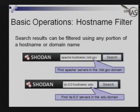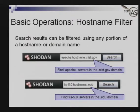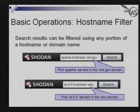Here are a couple of other searches to show the hostname filter. The hostname filter searches results using a portion of a host or domain name. For example, 'Apache hostname:.nist.gov' only finds results in the nist.gov domain. The second example is 'IIS 5.0 hostname:.edu' — this finds IIS 5.0 servers, which are Microsoft Windows 2000, running in the .edu domain. You could narrow that further to purdue.edu or whatever you're looking for.